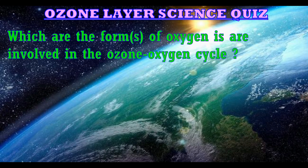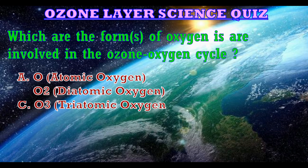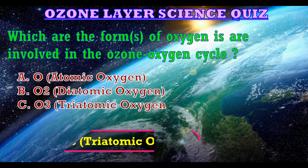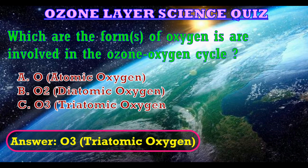Next question: which forms of oxygen are involved in the ozone-oxygen cycle? The options are: A. O (atomic oxygen), B. O2 (diatomic oxygen), C. O3 (triatomic oxygen). The answer is O3, triatomic oxygen.